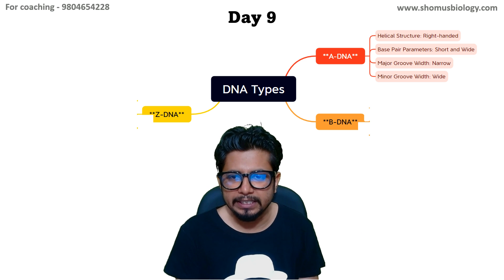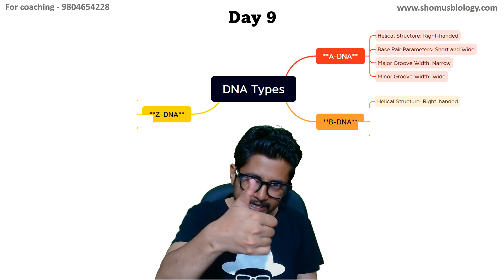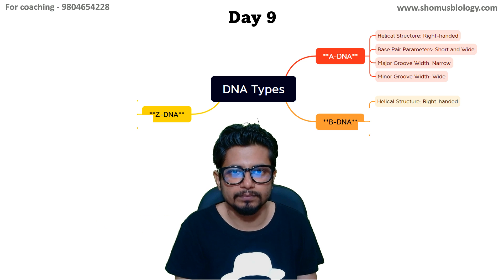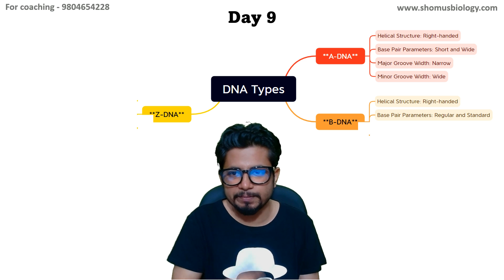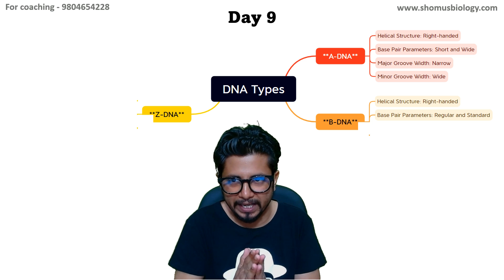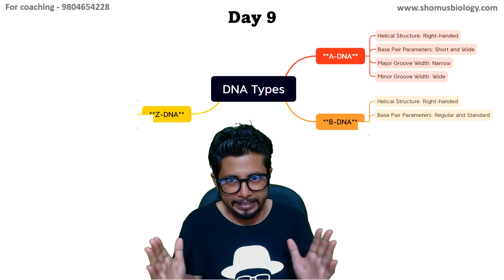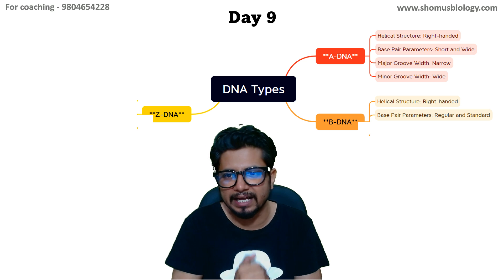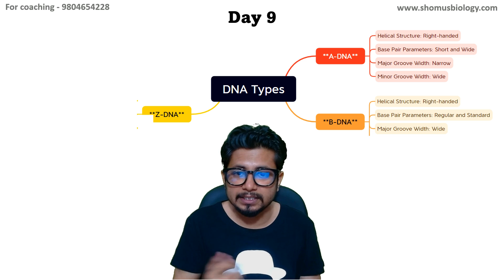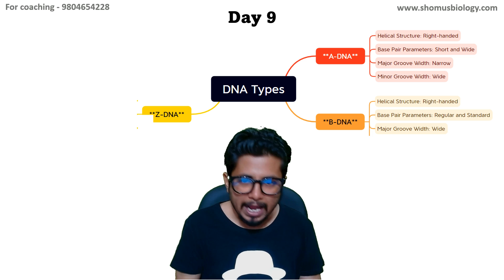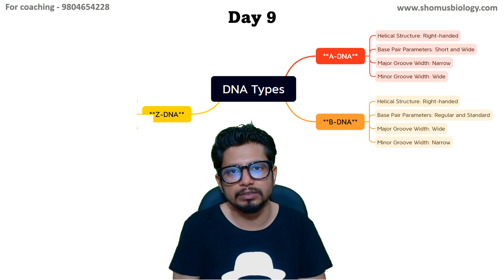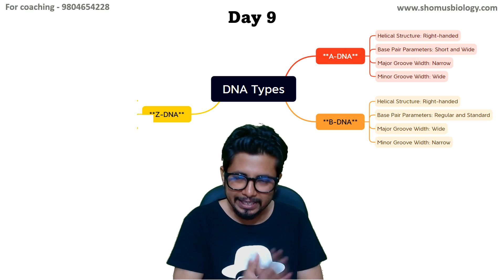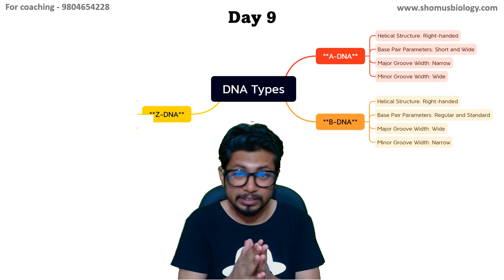B-DNA also has a right-handed helical structure, and it is the type of DNA that exists predominantly on Earth. Its base pair parameters are regular and standard — not short, not wide. The major groove is wide and the minor groove is narrow, which is the reverse of A-DNA, where the major groove is narrow and the minor groove is wide.